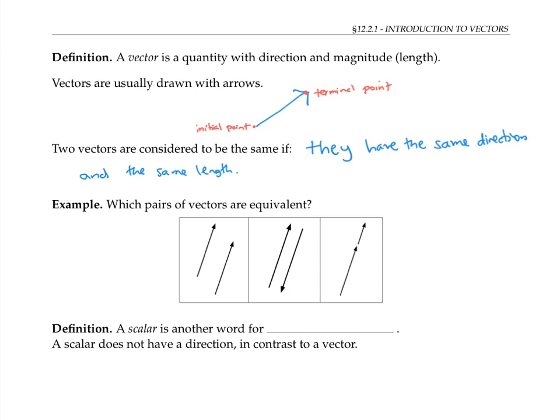The first two vectors are equivalent because they have the same direction and the same length, even though they start and end at different points. The next two vectors are not equivalent to each other — they have the same length, but they point in opposite directions.